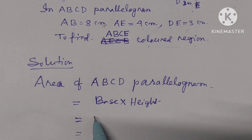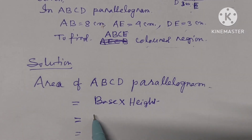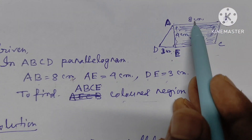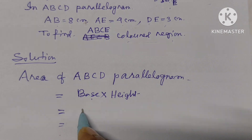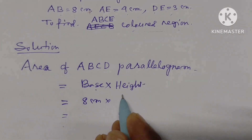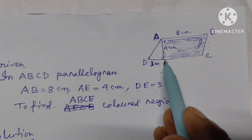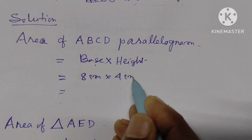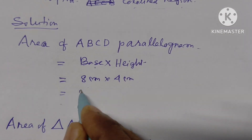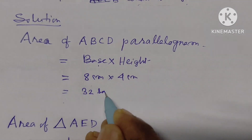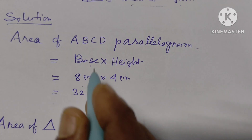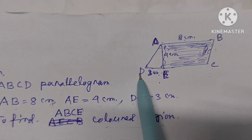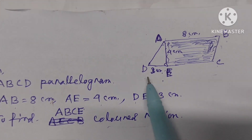The area of parallelogram ABCD: the formula is base into height. The base is 8 centimeters and the height is 4 centimeters. So the area of ABCD parallelogram is 8 × 4 = 32 square centimeters.